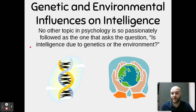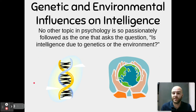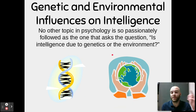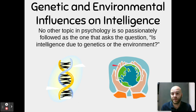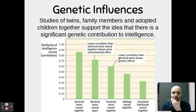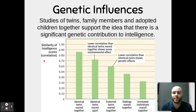How are these two extremes impacted by genetics and environment? There's no other topic in psychology so passionately debated as whether intelligence is due to genes or environment — the classic nature versus nurture debate. Twin studies, family member studies, and adopted children all support the idea that there is a significant genetic contribution to intelligence. Identical twins raised together have the strongest similarity in intelligence scores, with a correlation approaching nearly perfect.